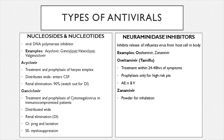Neuraminidase inhibitors inhibit the release of the influenza virus outside of the host, stopping it from being spread among people. Examples include oseltamivir and zanamivir — oseltamivir is also known as Tamiflu.